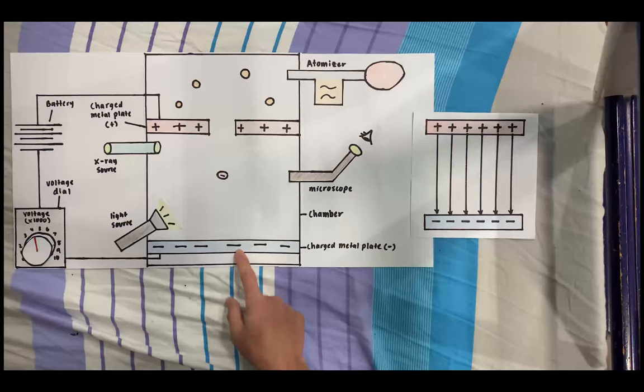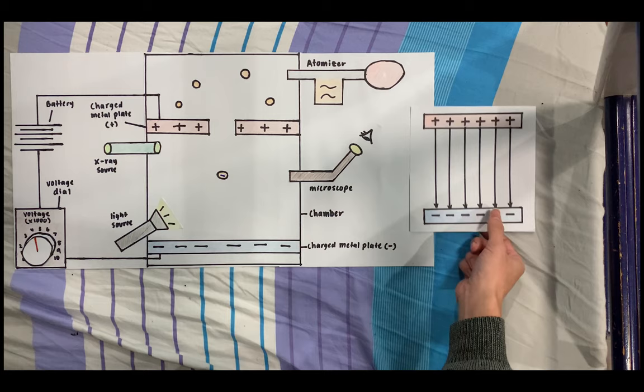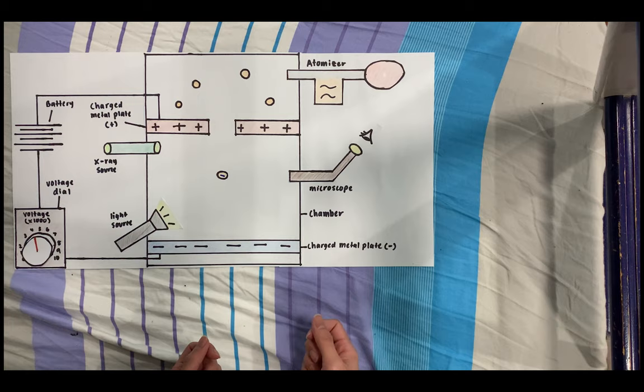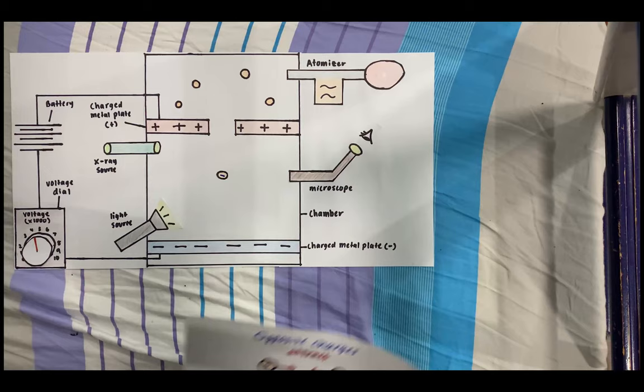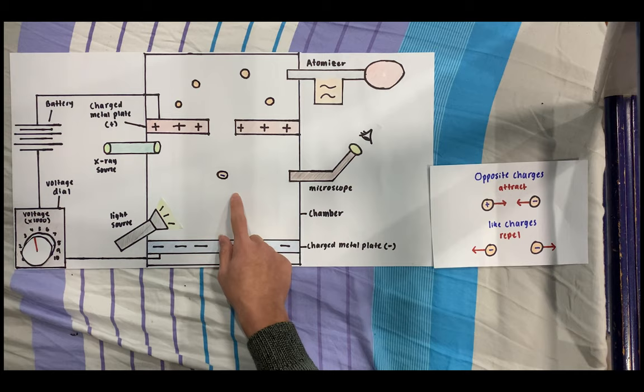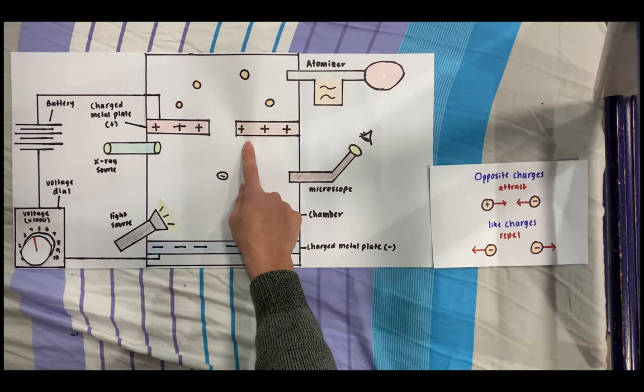Initially, the oil drops fall into this bottom chamber with the electric field between the plates off. They quickly reach terminal velocity due to friction of air inside the chamber. That is, the maximum constant velocity attainable by an object due to the force of a fluid, which in this case is air. When the electric field is turned on, there are two main forces acting on the oil droplet. We know that opposite charges attract and like charges repel. So for a negatively charged oil drop, it will repel from the negative plate and be attracted to the positive plate going up. At the same time, there's a gravitational force pulling the oil droplet down.